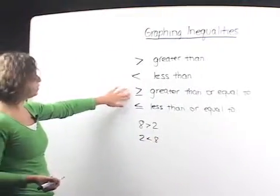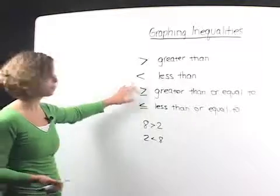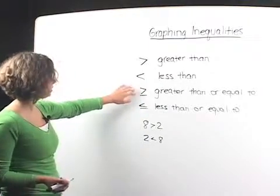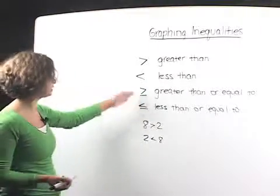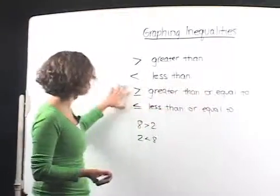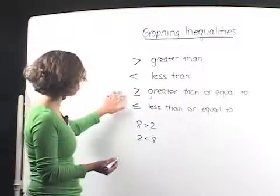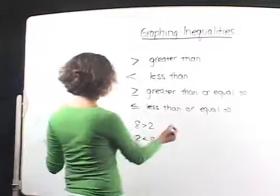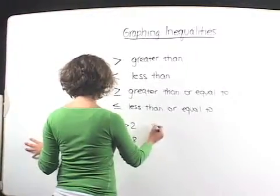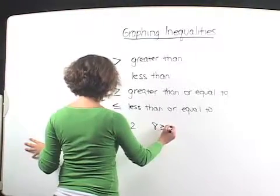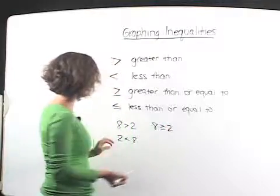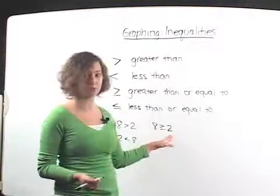The greater than or equal to symbol. Well, when you have that, it could be basically just what it says. It could be greater than or it could be equal to. So let's come up with a couple examples. We could say 8 is greater than or equal to 2, because 8 is greater than 2, so that works.